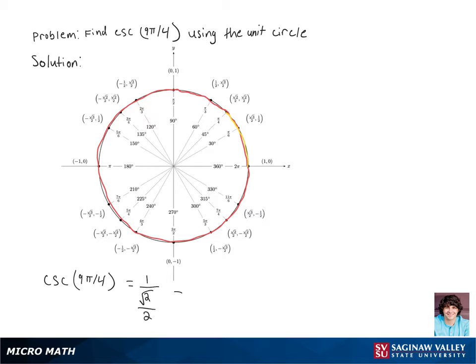Now dividing by a fraction is the same as multiplying by its reciprocal, so we get 2/√2.